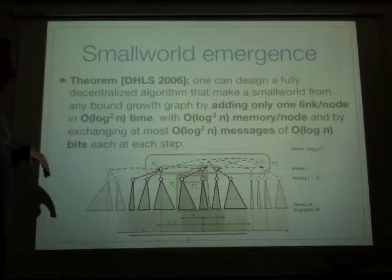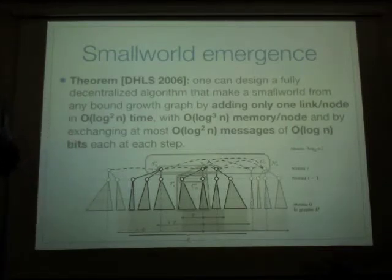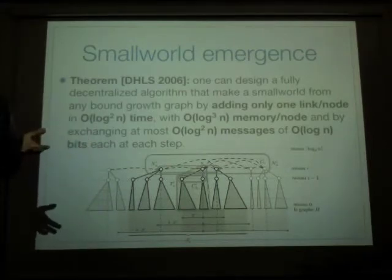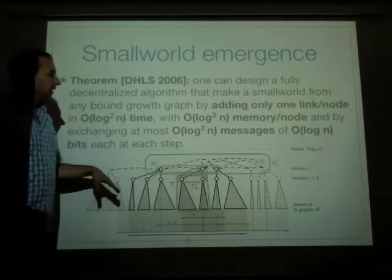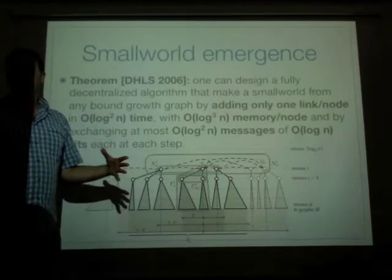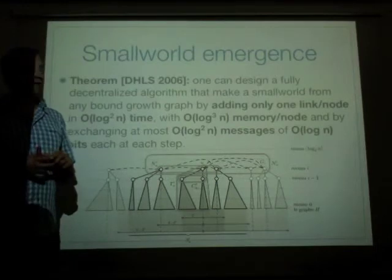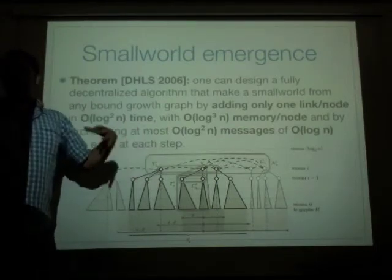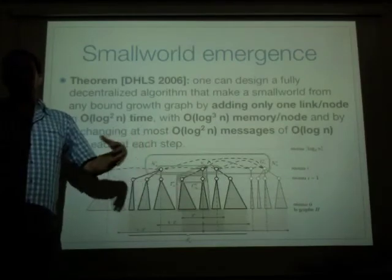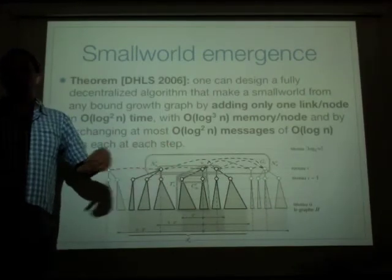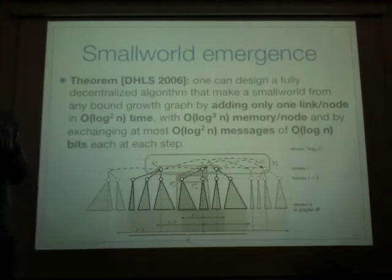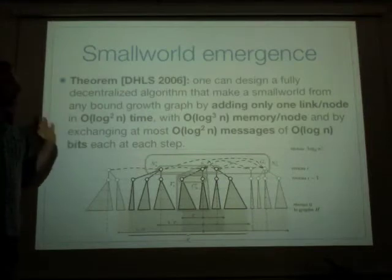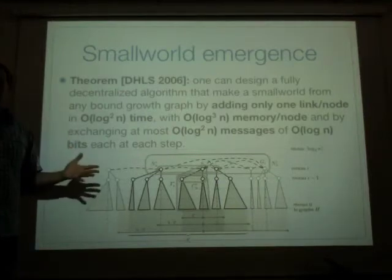The question is: can we try to make this model real? It turns out that it could be the case. We can find an algorithm — which I won't detail — that constructs this model using very, very few resources. You start from any graph; everybody knows their relative geographic positions, and we want to build the long-range links. It's a kind of planification of friendship, so that everybody is close to each other. The number of resources we consume to do that is realistic.